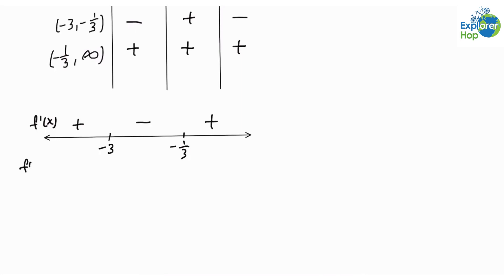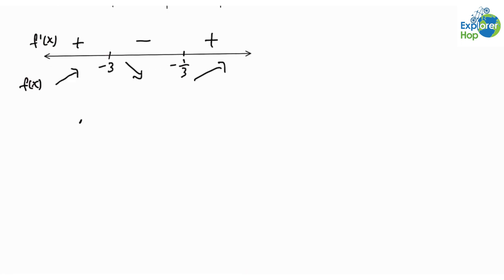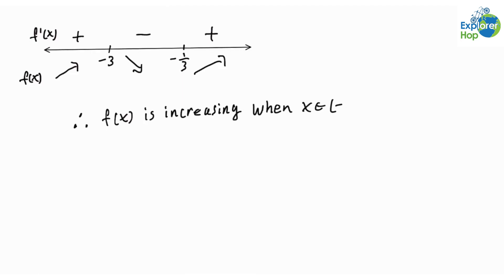So f of x is increasing in the first interval, decreasing in the second, and increasing in the third. Therefore, f of x is increasing from negative infinity to negative 3 and from negative 1 over 3 to infinity, and f of x is decreasing when x is in the interval from negative 3 to negative 1 over 3.